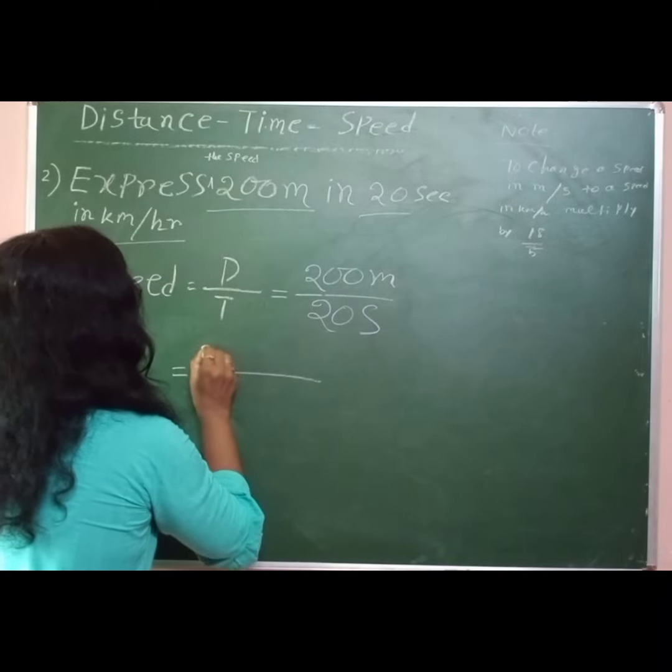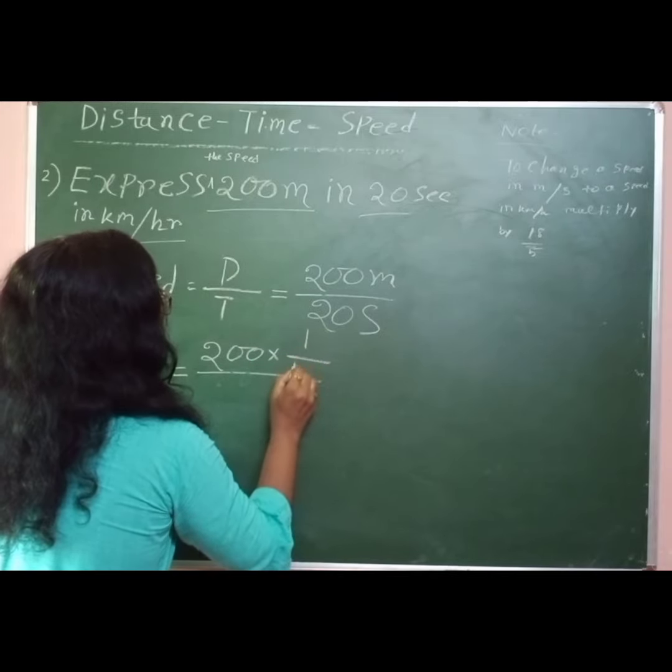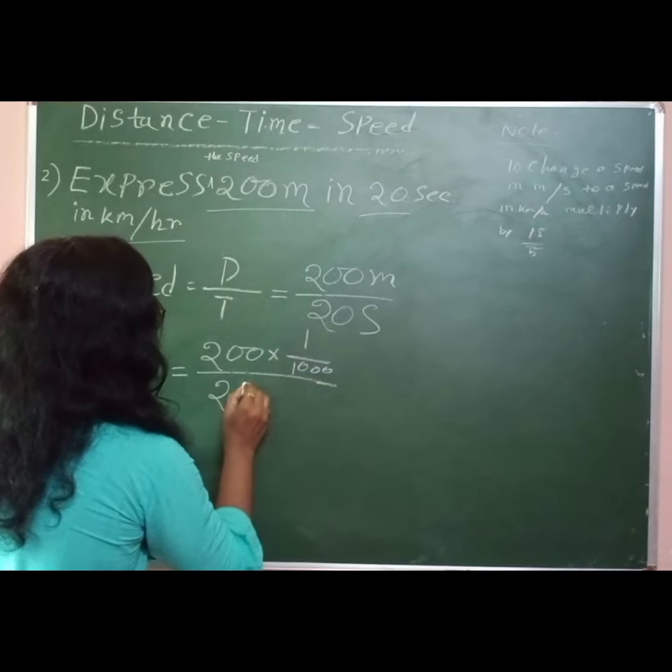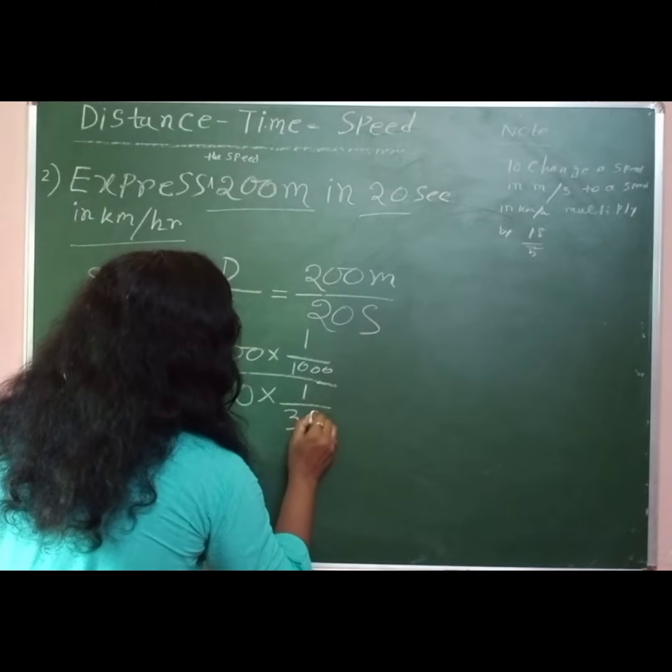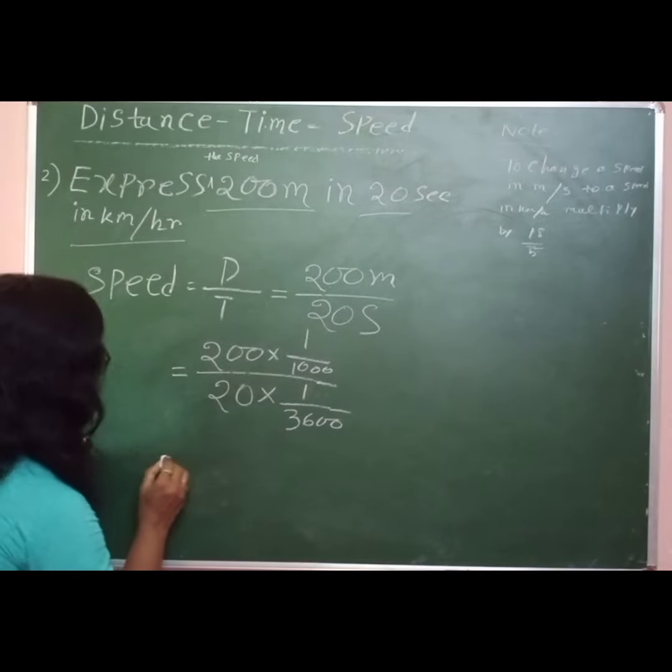So 200 into 1 by 1000 and 20 into 1 by 3600. So now we have to calculate.